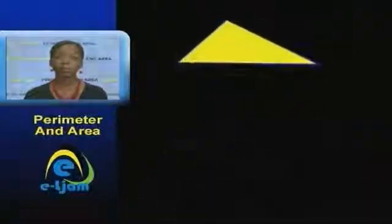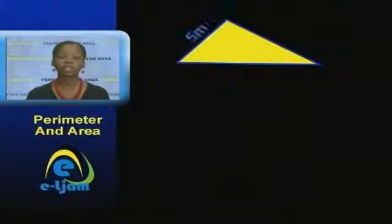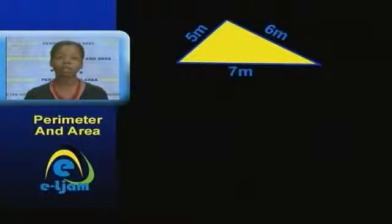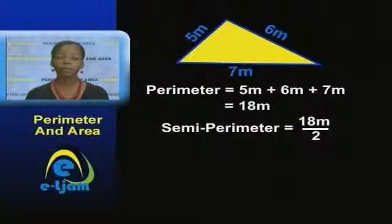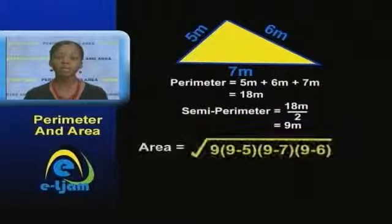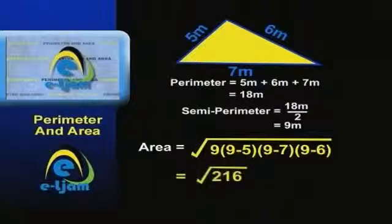For example, a triangular garden plot has dimensions 5 meters, 6 meters, and 7 meters — picture it to have the shape of a scalene triangle. First, we find the perimeter of the triangle, which is 18 meters. Then, as the name semi-perimeter suggests, we divide the perimeter by 2, which gives us 9 meters. We then substitute this value along with the sides into the formula to find the area. So the area of the plot would be approximately 14.7 meters squared.